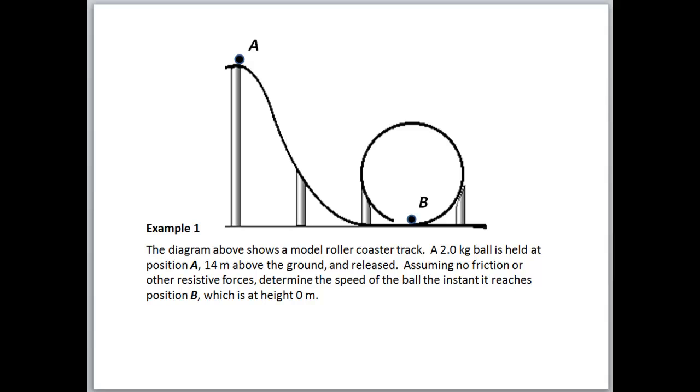Here's an example problem, a very typical conservation of energy problem. Another one with friction not in the problem. So this is one in which mechanical energy is conserved. We are given some variables. We're given the mass of a ball on a track, a model roller coaster track. A 2 kg ball is going to fall from rest at point A. And we want to know the speed at the bottom, 14 meters below, at point B.